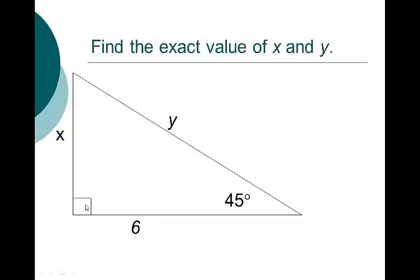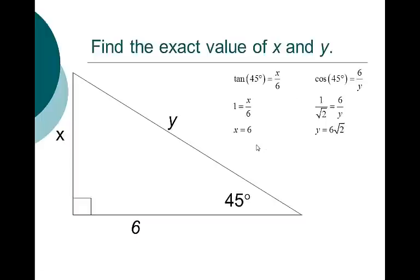Now 45-45 right triangles are unique. You had a theorem in geometry that says sides across from congruent angles are congruent. This is 45 degrees, so the other angle must also be 45 degrees, which means x and 6 have to equal each other. The tangent of 45 is x over 6 — opposite over adjacent — and tangent of 45 is 1, so x equals 6. To find y, we do cosine 45 degrees: adjacent over hypotenuse equals 6 over y. Cosine of 45 is 1 over square root of 2; cross multiply to get y equals 6 square root of 2. Note that 1 over square root of 2 is equivalent to square root of 2 over 2.